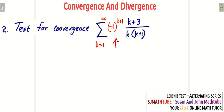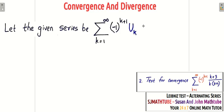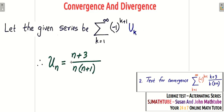Now we have another question. Clearly it's an alternating series because we have (-1)^(k+1) — when k=1 it's positive, k=2 negative, k=3 positive, etc. The series is given in terms of k, but we can proceed with un notation. So un = (n+3) / (n(n+1)).